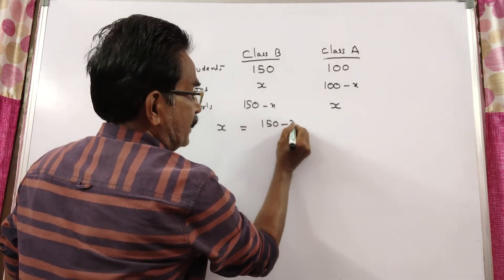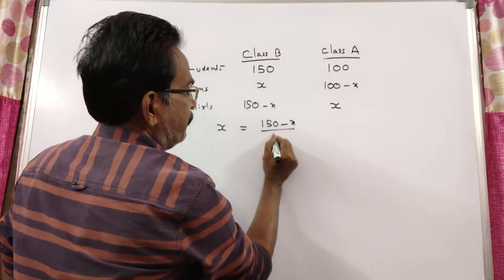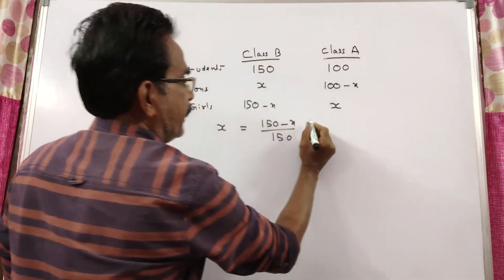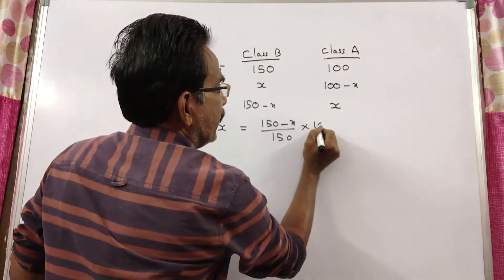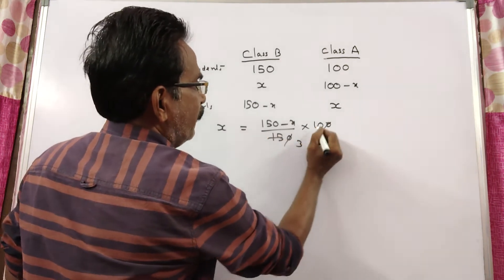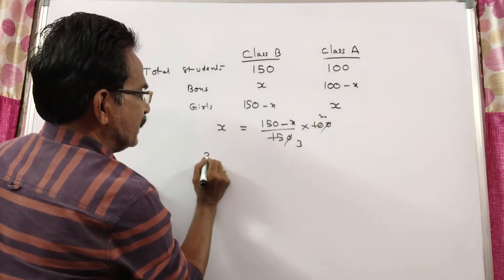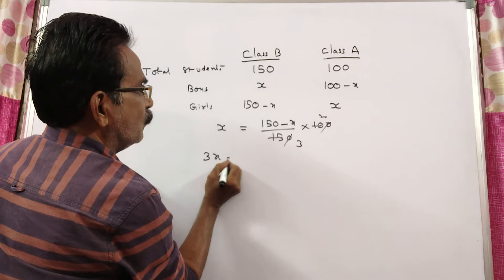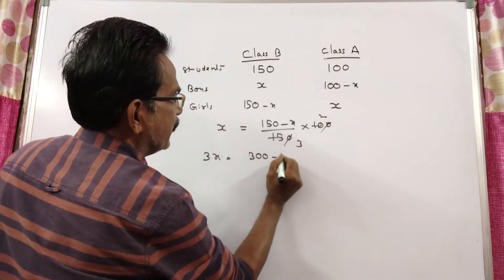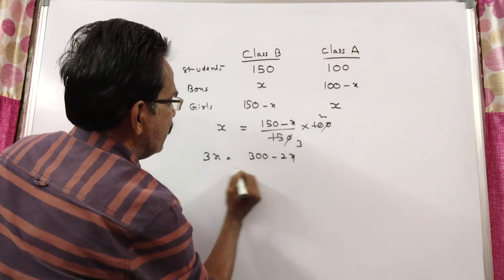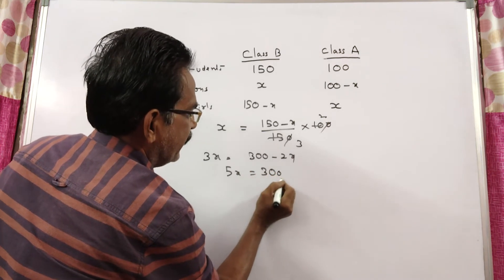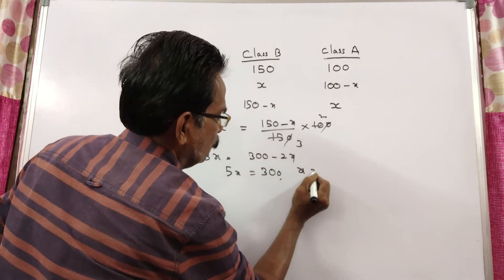The percentage of girls in class B is (150 minus X) over 150 into 100. Cross-multiplying: 3X equals 300 minus 2X, so 5X equals 300, giving X equals 60.